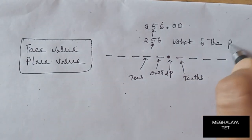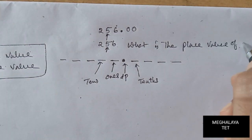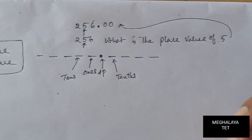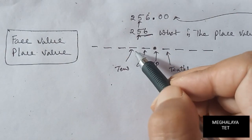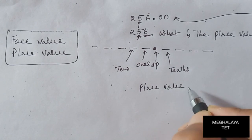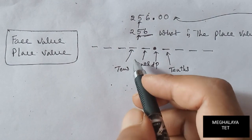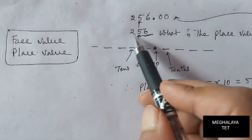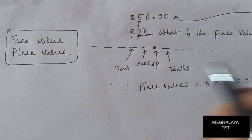For place value, since 5 is in the tens place, we multiply: place value of 5 = 5 × 10 = 50. So the place value of 5 in 256 is 50.